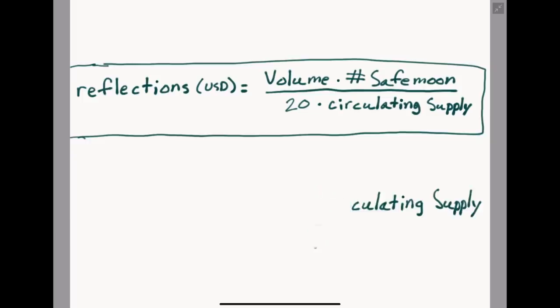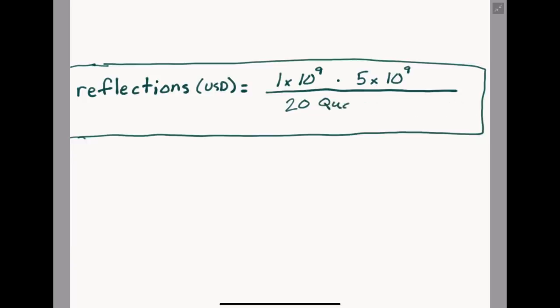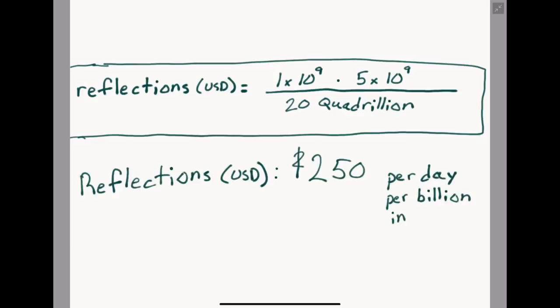Let us substitute in some values to see how our reflections will behave under various conditions. For starters, I will introduce my favorite equation. Assuming we do not stop the burn, let us assume I have 5 billion Safemoon, my personal goal, and our daily volume reaches and stays steady at 1 billion dollars, which is modest if the exchange, debit card, or blockchain perform even decently well. Since the burn wallet is still in effect today, we will divide by our normal value, 20 quadrillion, and see that you will earn 250 dollars per day per billion dollars in volume, just for holding. This value does not change based on price, and will only increase based on how large the burn wallet becomes.